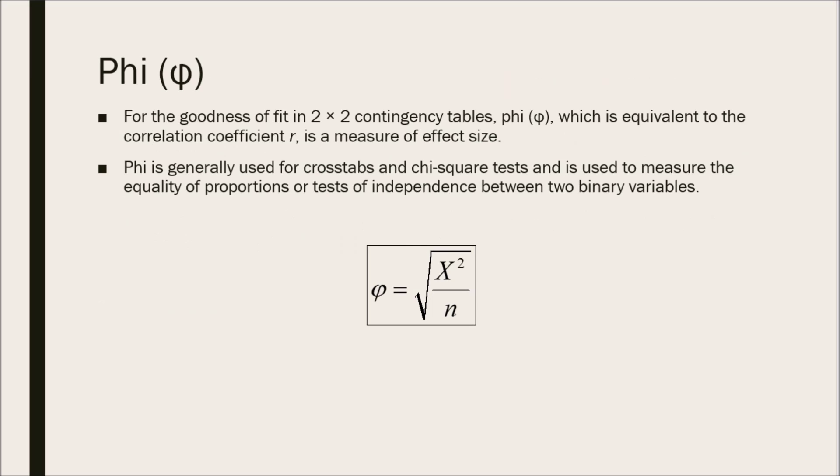Phi is generally used for crosstabs and chi-square tests and is used to measure the equality of proportions or tests of independence between two binary variables. Binary here means 1 or 2 or 0 and 1, but there can't be more than two options in the set of data. And here is the calculation or the formula for the calculation of Phi.